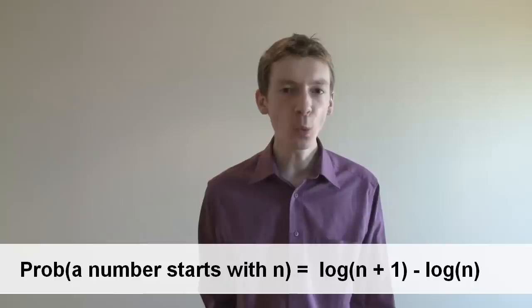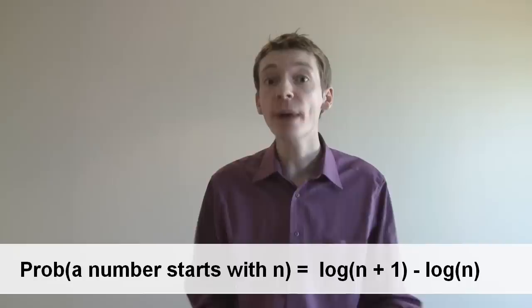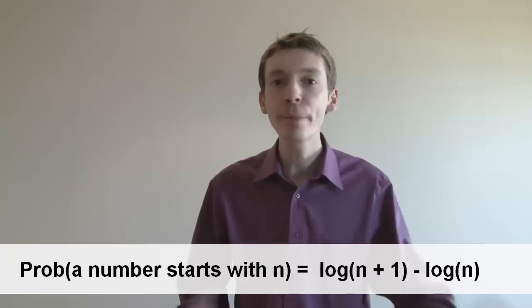I'm going to show you why, but the idea essentially is that if we collect a lot of data, we want the amount of data between 1 and 2 to be the same as the amount of data between 10 and 20. And I want that to be the same as the amount of data between 100 and 200. And the only way you can do that is if the probability that you start with a number 1 is 30%.